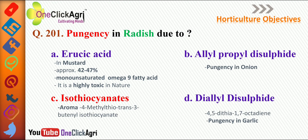Erucic acid is present in mustard, containing approximately 42 to 47 percent of mustard oil; it is a monounsaturated omega-9 fatty acid and is highly toxic in nature. Allylpropyl disulfide causes pungency in onion. Pungency in garlic is due to diallyl disulfide, also called 4,5-dithia-1,7-octadiene.